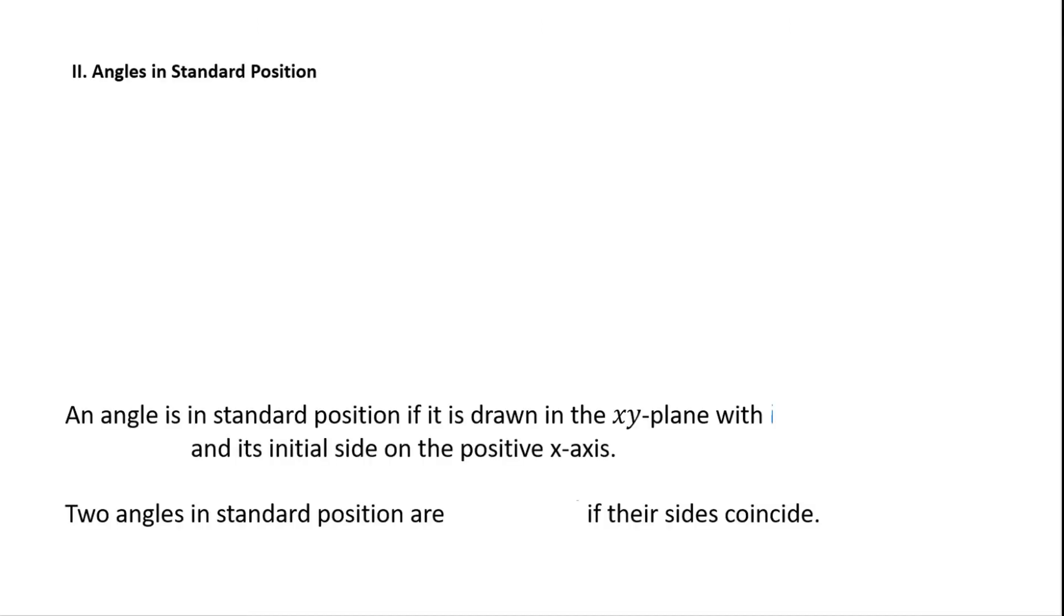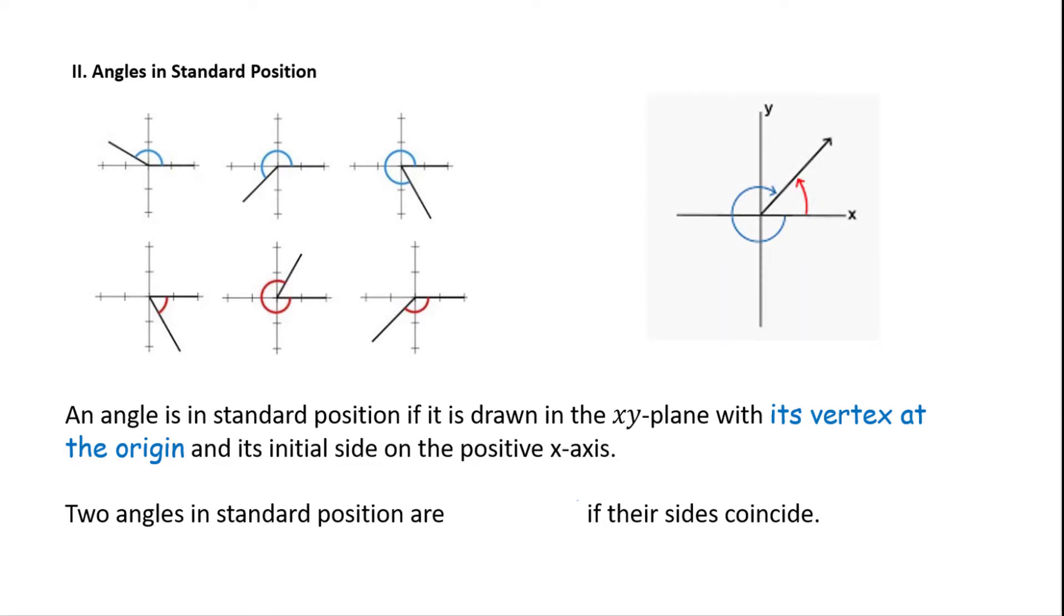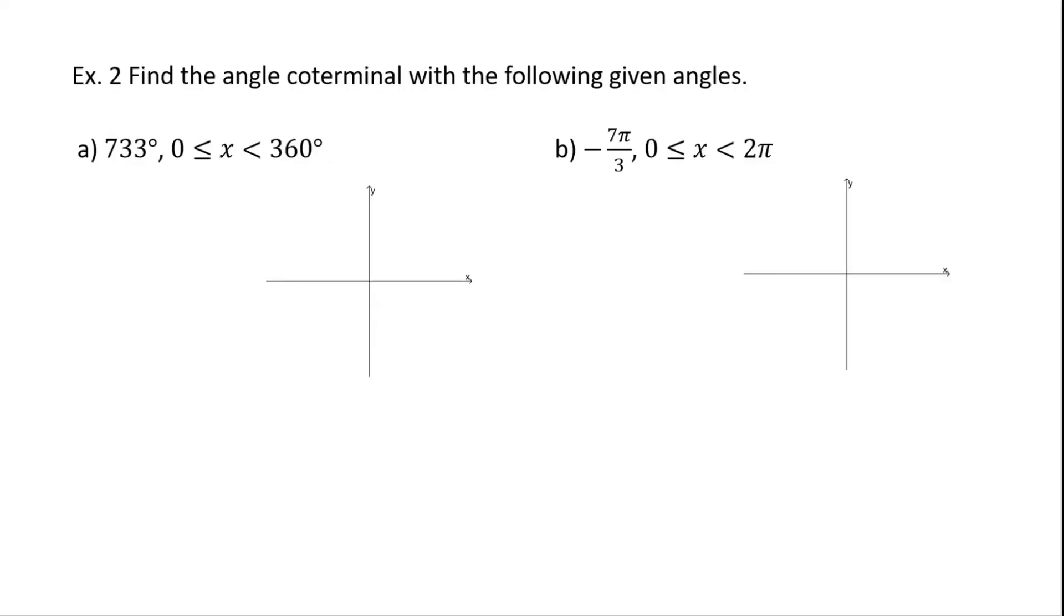Roman numeral 2. An angle is in standard position if it is drawn in the xy-plane with its vertex at the origin and its initial side on the positive x-axis. We say that two angles in standard position are coterminal if their sides coincide.